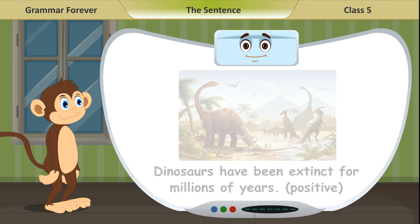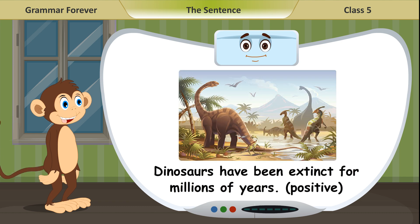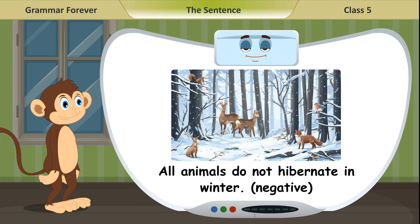Examples: Dinosaurs have been extinct for millions of years (positive). All animals do not hibernate in winter (negative).